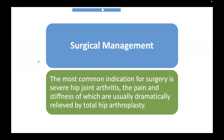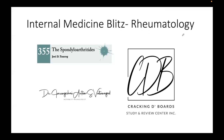For surgical management: the most common indication for surgery is severe hip joint arthritis in which pain and stiffness do not respond to medical treatments, including monoclonal antibodies. These cases are dramatically relieved by total hip arthroplasty. This ends our summary of Chapter 355, the spondyloarthritides.